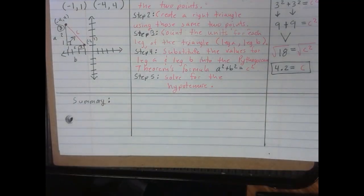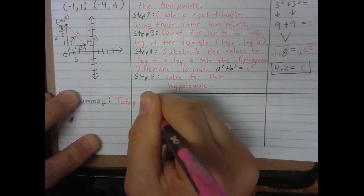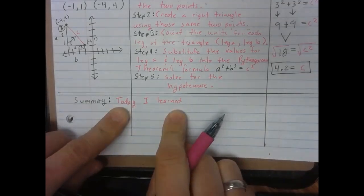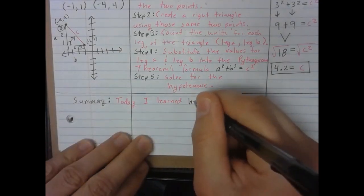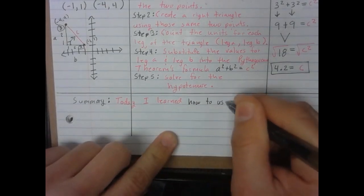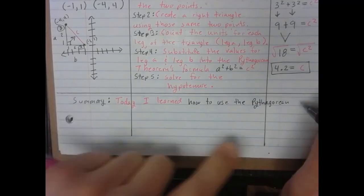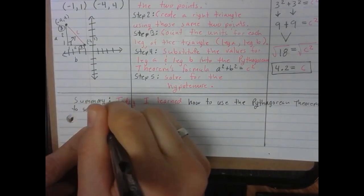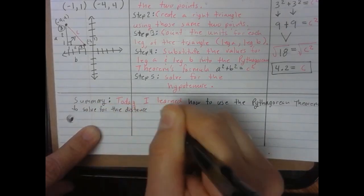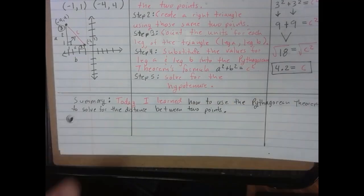We're going to use our sentence stems. The first sentence stem is 'Today I learned...' — you always start your summary that way and then fill in the rest with your own words. So I'm writing: 'Today I learned how to use the Pythagorean theorem to solve for the distance between two points.' That was my first sentence.